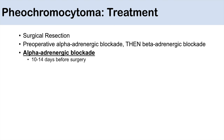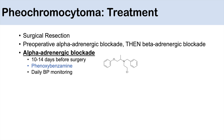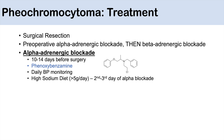Alpha-adrenergic blockade involves about 10 to 14 days of therapy before surgery, typically using phenoxybenzamine, with daily blood pressure monitoring. By the second to third day of alpha blockade, the patient should begin a high sodium diet — generally greater than 5 grams of sodium per day — because alpha blockade can cause vasodilation and a drop in volume status.